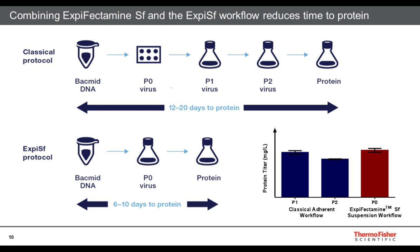How important is it to codon-optimize the gene for expression in insect cells, and how well would a gene optimized for E. coli or HEK cells express in this system? We haven't tested this side by side, but literature shows some benefits of codon optimization. We have expressed proteins typically expressed in mammalian or E. coli systems and seen good expression, but a direct comparison has not been done — that would be a good thing to test in the future.